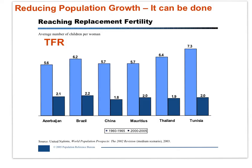Through government programs and NGO work, birth rates can decline, moving countries out of the transitional stage 2 and into the industrial stage 3 or post-industrial stage 4. In this graph, the TFR dropped dramatically from 1965 to 2005. Again, educating women, providing access to contraceptives, and providing access to information about family planning, among other factors, serve to drive down birth rates.